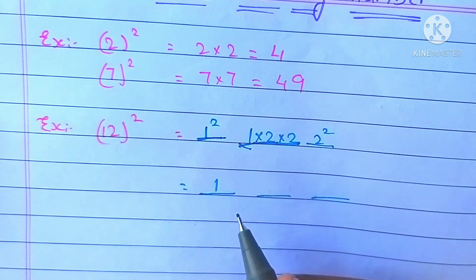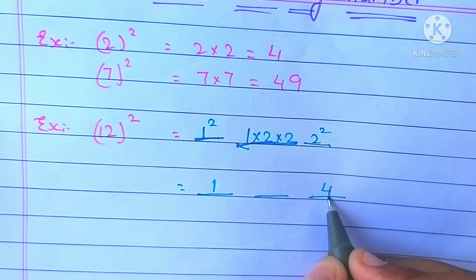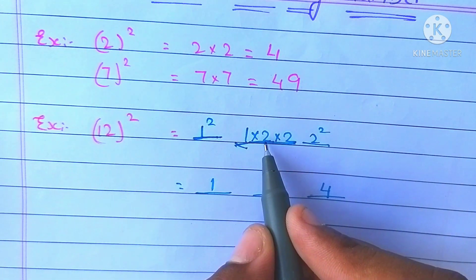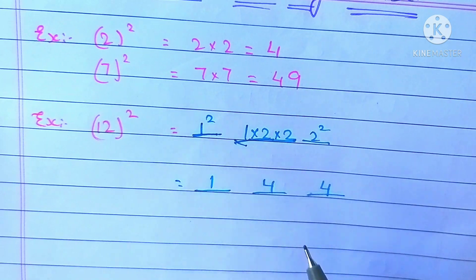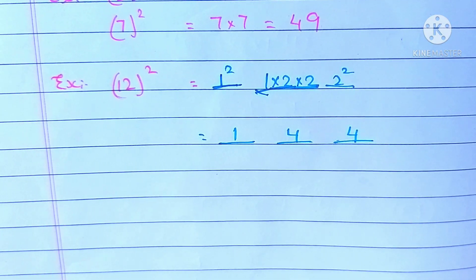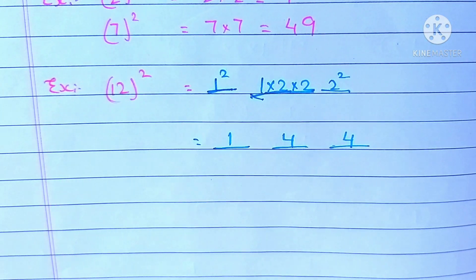1 square is 1. 2 square is 4. 1 into 2 is 2, and 2 twos are 4. Therefore, the value of 12 square is 144.